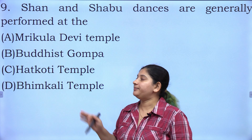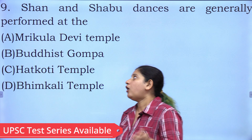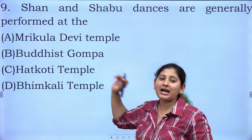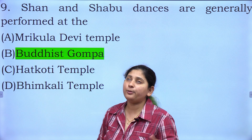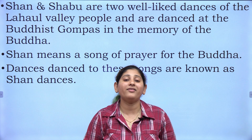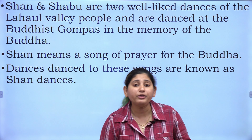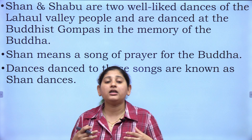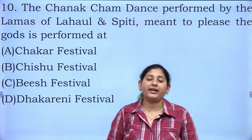The ninth question: Shan and Shabu dances are generally performed at? A) Marikula Devi temple, B) Buddhist Gompa, C) Huttkoti temple, or D) Bhimakali temple. Your correct answer is B) Buddhist Gompa. Shan and Shabu are two well-liked dances of Lahaul Valley, performed at Buddhist Gompa in memory of Gautam Buddha. Shan is called a song of prayer for Buddha, and the dances performed to these songs are called Shan dances.